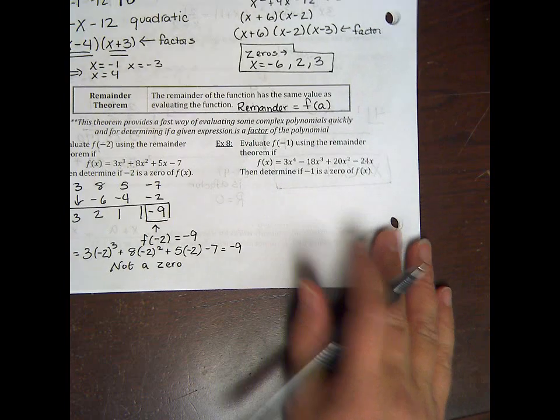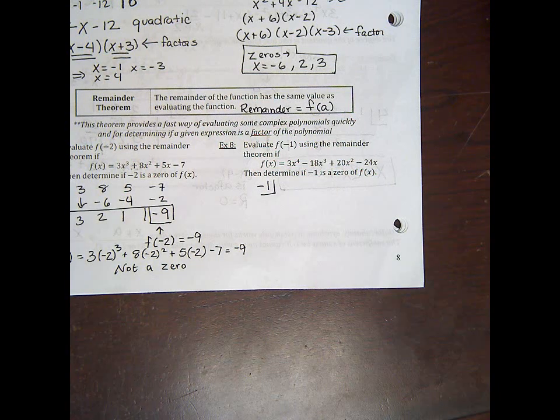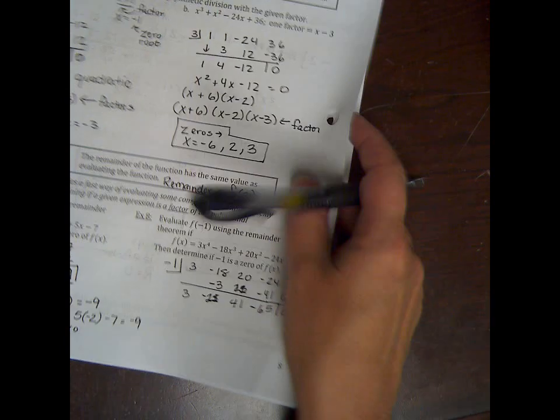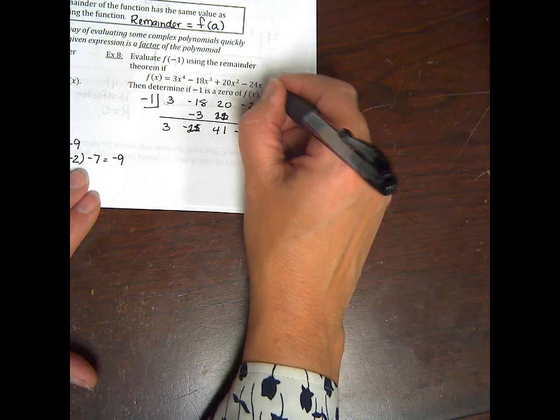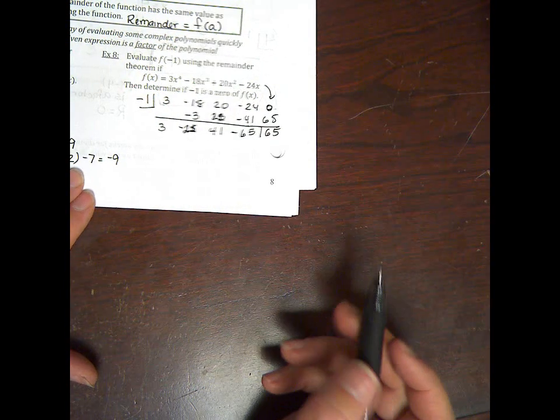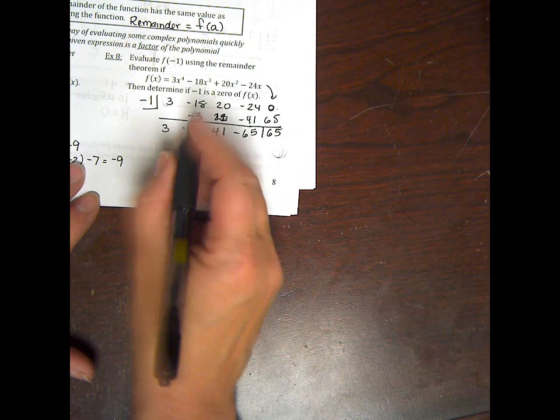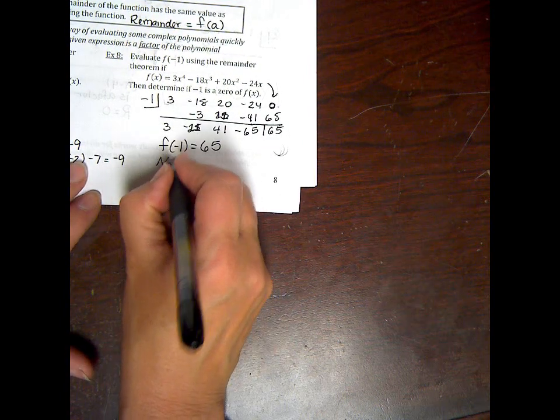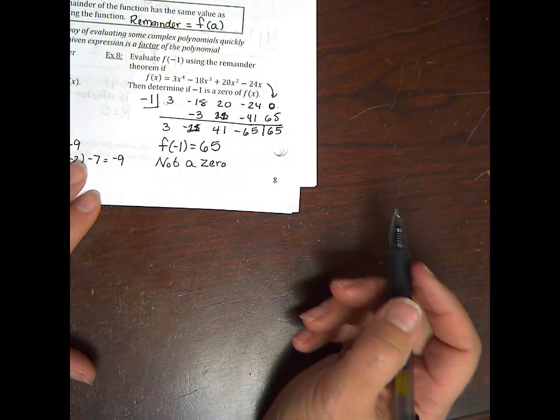Okay, so you try number 8. Synthetically divide by negative 1 and see what remainder you get and that's going to be f of negative 1. Okay, so I had to divide it. Negative 1 into 3, negative 18, 20, negative 24. Notice there's no constant term, so make sure you put a 0 to hold that final constant term. When I synthetically divide it, I ended up with a remainder of positive 65. So that means f of negative 1 equals 65, which means it's not a zero because it's not equal to 0. Nice job. Go practice.